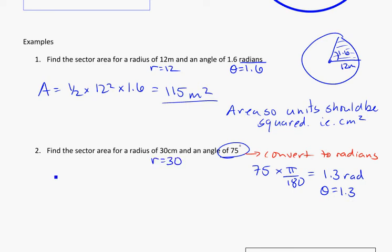And I'm looking for my area. So my area equals one-half times 30 squared times 1.3, which equals 585 centimeters squared. Again, using squared units.